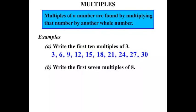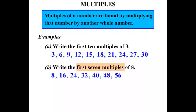Write the first 7 multiples of 8. So we go through our 8 times tables: 8 ones are 8, 8 twos are 16, 8 threes are 24, 8 fours are 32, 8 fives are 40, 8 sixes are 48, and 8 sevens are 56. We'll stop there because we only wanted the first 7 multiples.